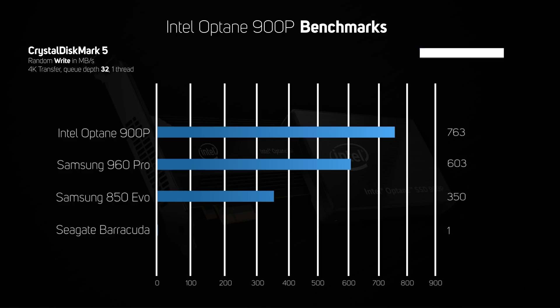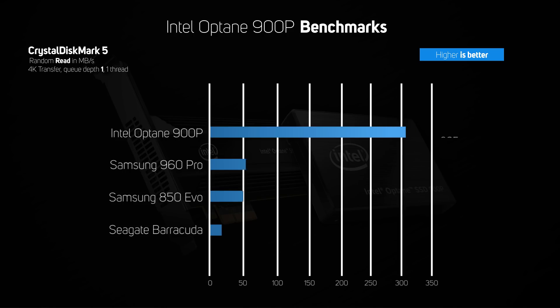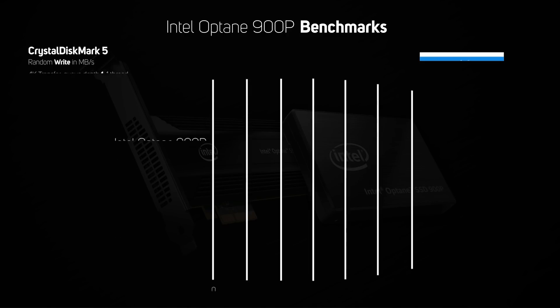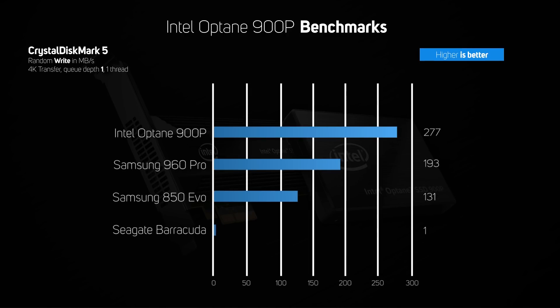The final scenario we ran in CrystalDiskMark kept the transfer size at 4K but dropped the queue depth to 1, simulating how many games load data when starting up. Under these conditions the 900p was the clear winner when reading, transferring data at a ludicrous 522% faster than the 960 Pro. The results were closer when writing, but even so, the 900p was still a massive 43% faster than the 960 Pro.